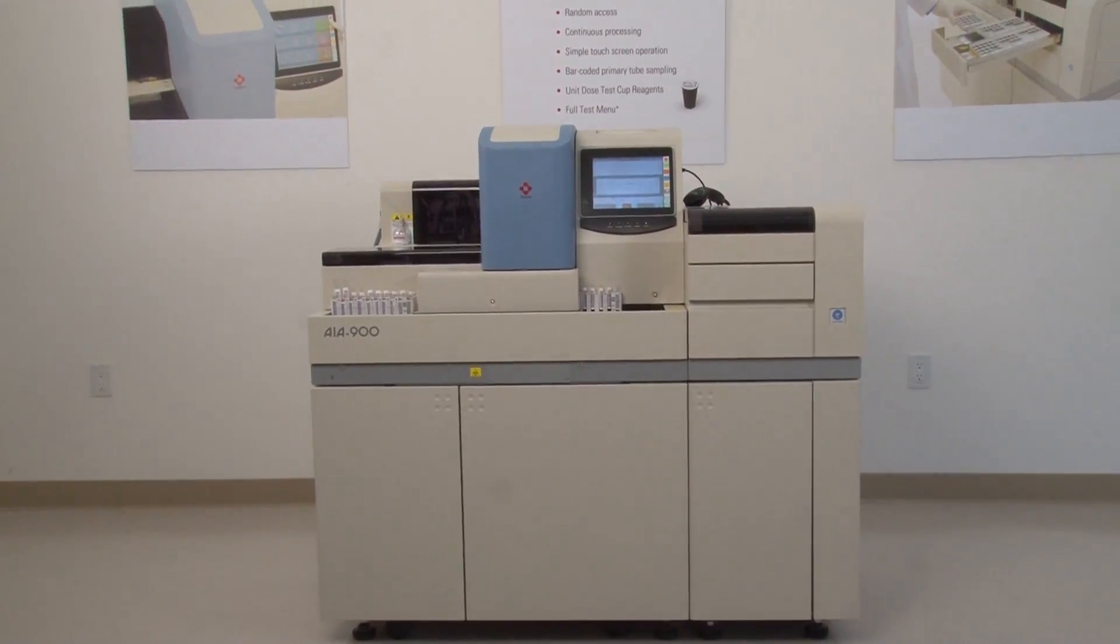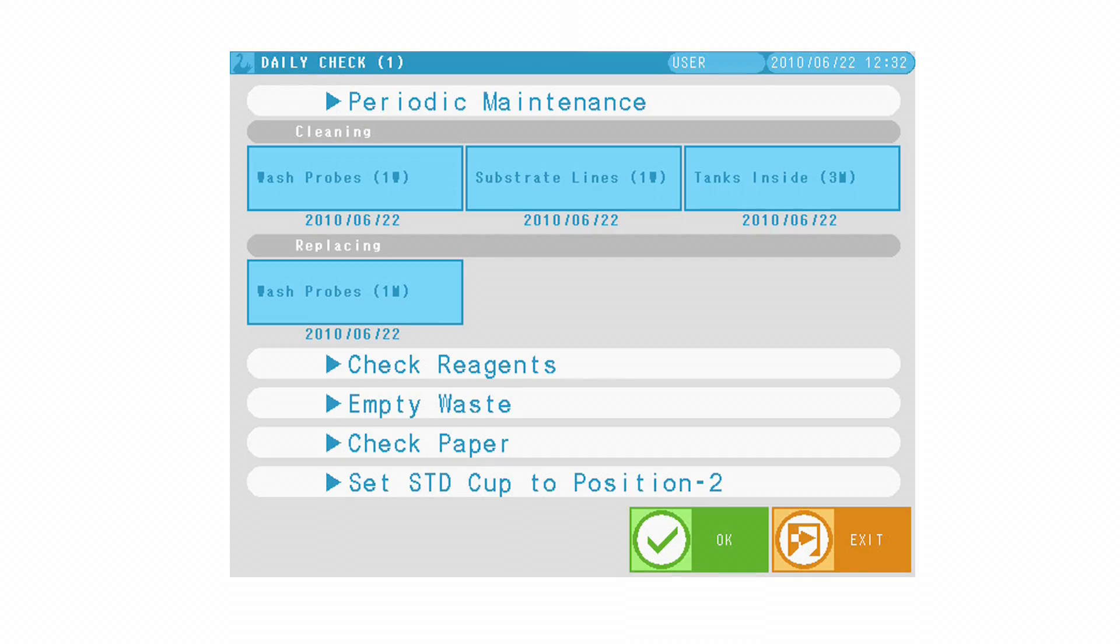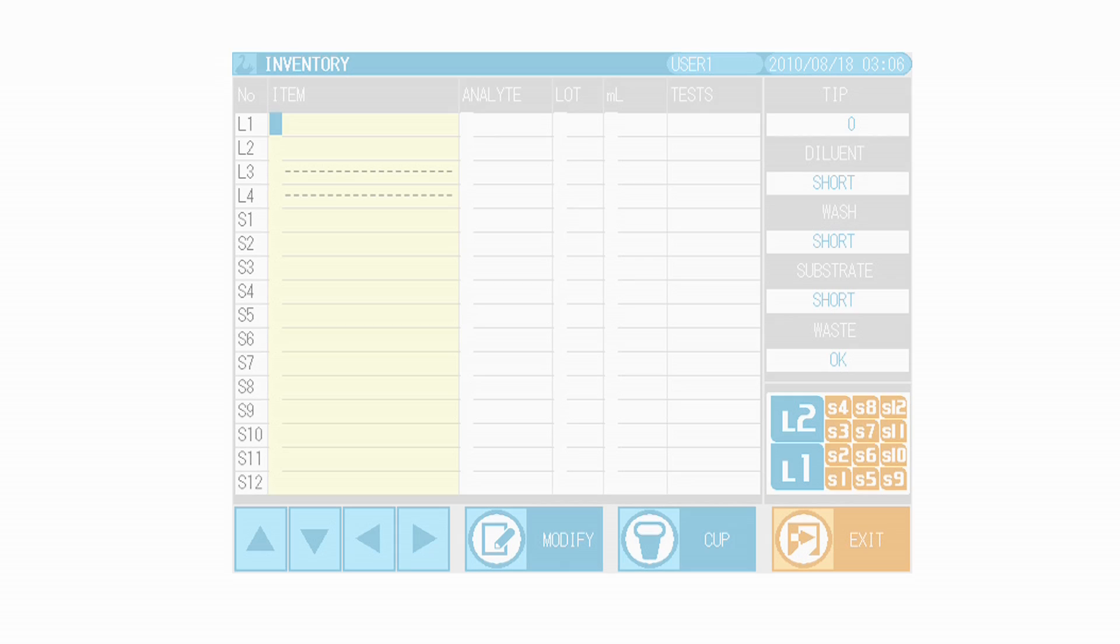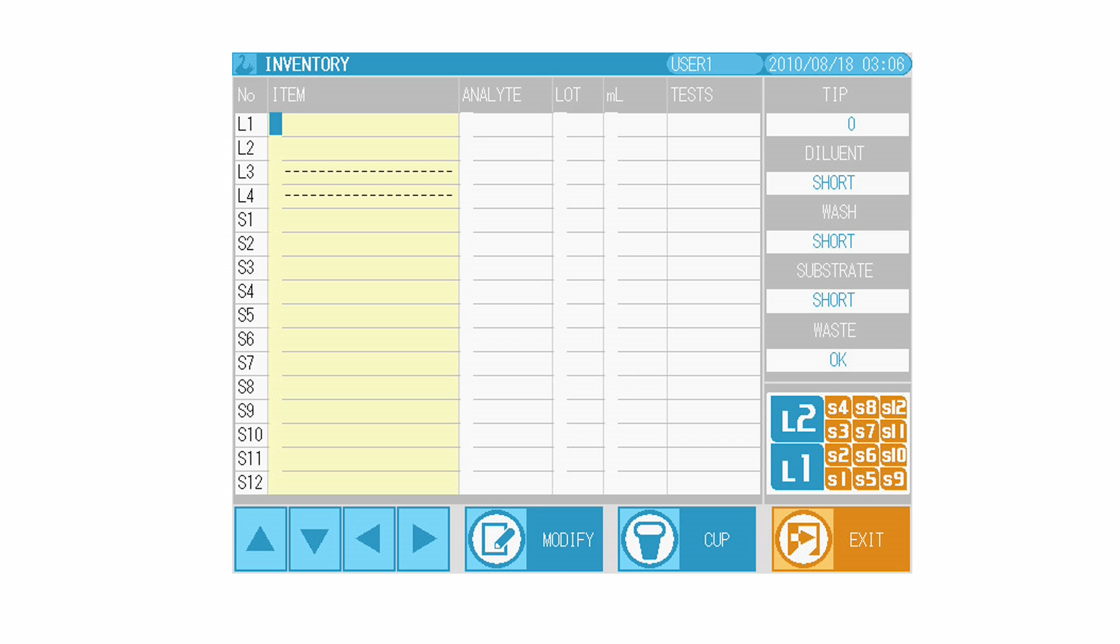At startup, the operator runs the daily system check. A series of maintenance and system checks are performed automatically. The inventory management screen indicates fluid levels,